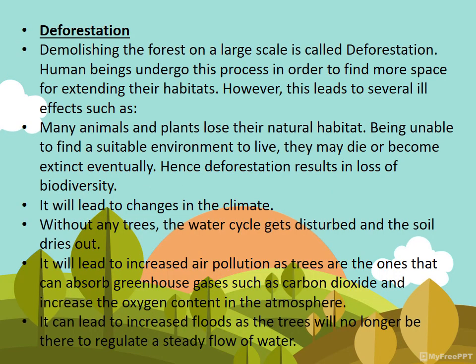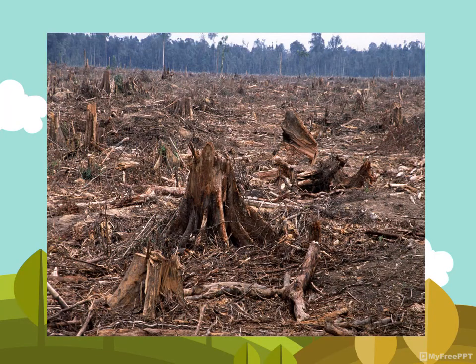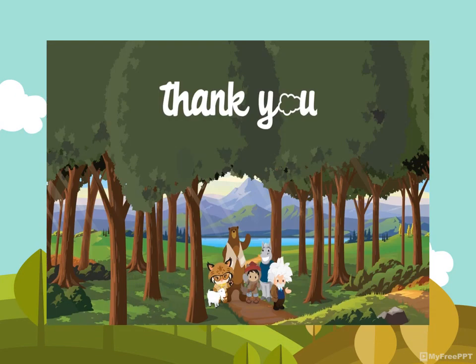Deforestation means demolishing or clearing forests on a large scale. Because of deforestation, global warming and other problems occur. The ill effects of deforestation include: many plants and animals lose their natural habitat, climatic changes occur, the water cycle gets disturbed, the soil dries out leading to drought and famine, and it can lead to increased floods as trees are no longer present to regulate the steady flow of water. Thank you, children.